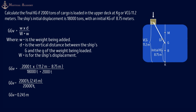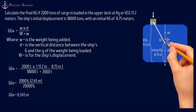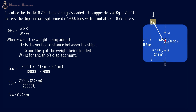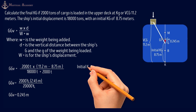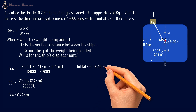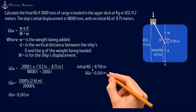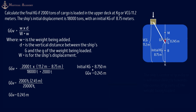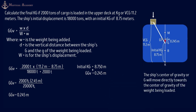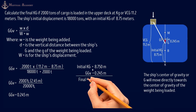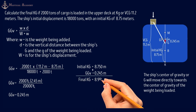The vertical shift of G from its initial position to Gv after loading is 0.245 meters. To find the final KG, we take the initial KG of 8.75 meters and add the GGv of 0.245 meters, since the effect of loading is an increase in KG. Our final KG after loading is 8.995 meters.